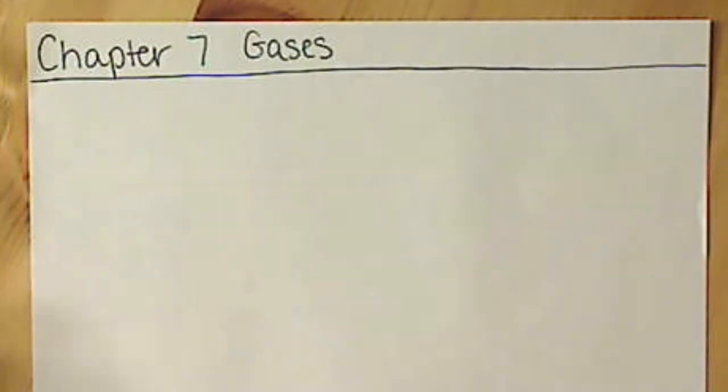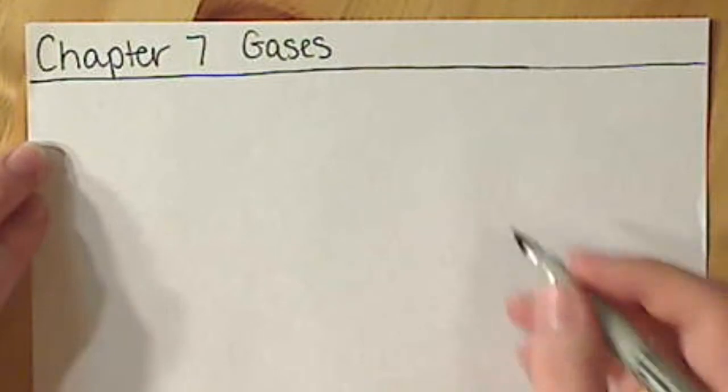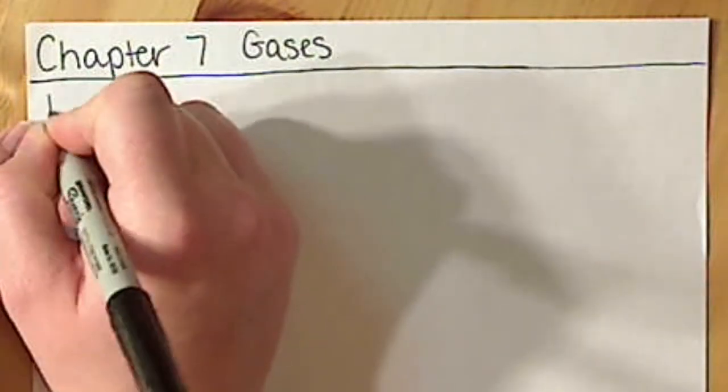Section 7.3 to 7.7 covers a bunch of individual gas laws, which are really helpful for understanding gases. But we aren't going to be doing a lot of discussion with gases. We're basically just going to be doing some calculations. So those individual gas laws aren't as important to us. We're actually just going to skip to the most important gas law, and that is the ideal gas law.